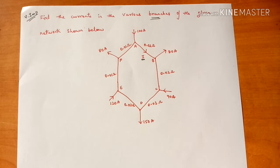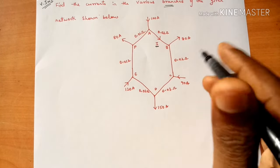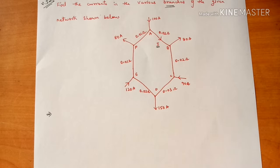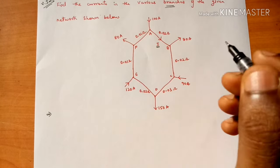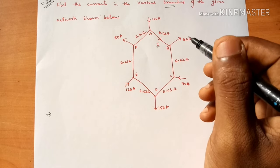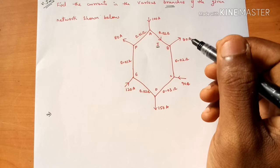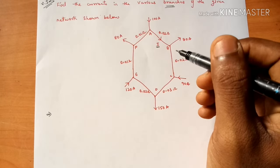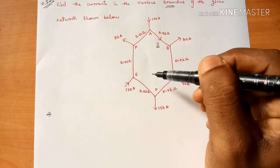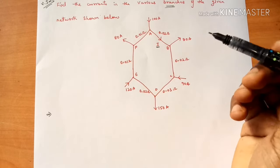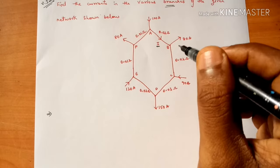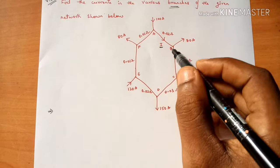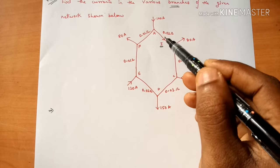Before finding the branch currents, you have to draw the branch current directions — that is very important. To draw the branch current directions, we will apply KCL, Kirchhoff's current law. This circuit is a bit complicated, so you can't use Ohm's law; you have to use Kirchhoff's laws. Inside the network you can see only one loop.